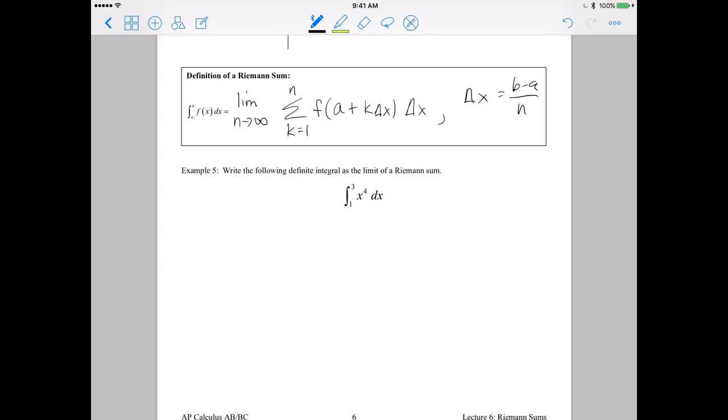Okay, so example 5, write the following definite integral as the limit of a Riemann sum. So the first thing I want to figure out is what is delta x? Well, delta x is b minus a over n. So if I look here, b is 3, and a is 1. So this is going to be 3 minus 1 over n, which is 2 divided by n. So that's my delta x.